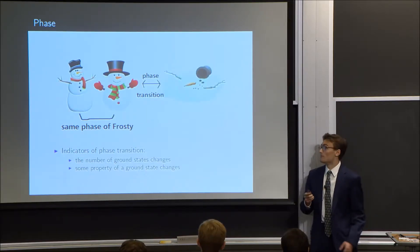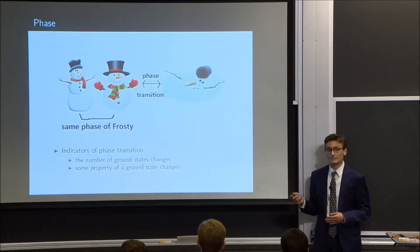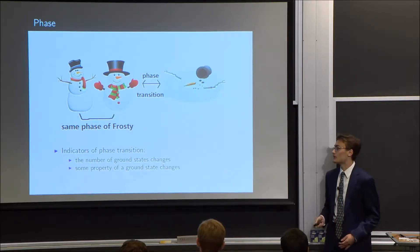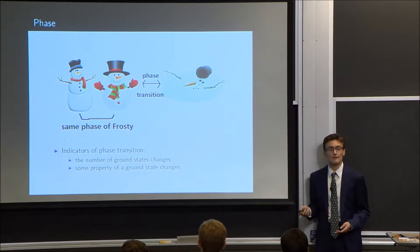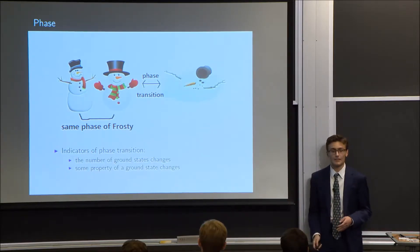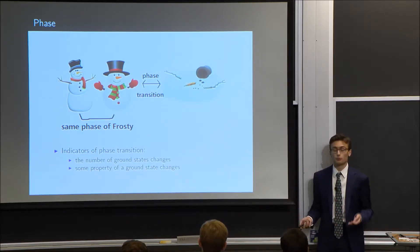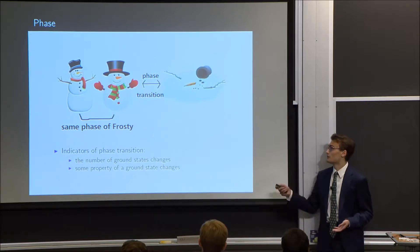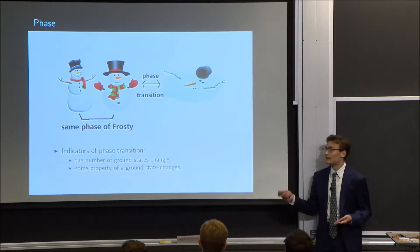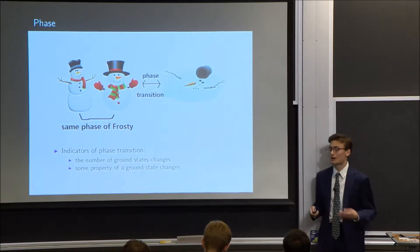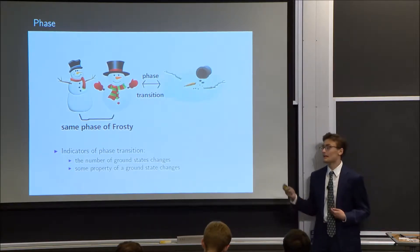Two systems are said to be in the same phase when their ground states have similar properties. For example, if their ground states have the same shape of the correlation function, then generally that means they're in the same phase. If we notice that the number of ground states changes, or some property of a ground state such as the shape of its correlation function changes — or, you know, if your snowman stops looking like a snowman — that's a pretty good indicator that a phase transition has occurred, and that's what we're trying to look for.